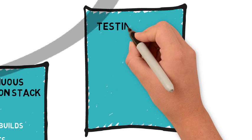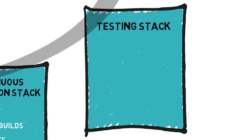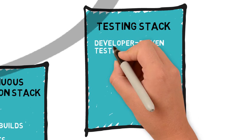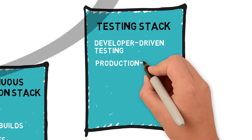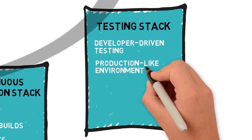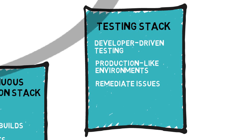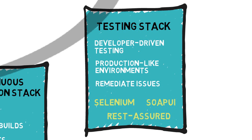The testing stack is used in managing testing throughout the software development lifecycle. The key to high productivity and quality code is developer-driven testing in production-like environments for each phase of the lifecycle. It is more effective to expose and remediate issues earlier in the lifecycle. For this stack, you can use tools such as Selenium, Rest Assured, SoapUI, SonarCube, and vRealize Automation.